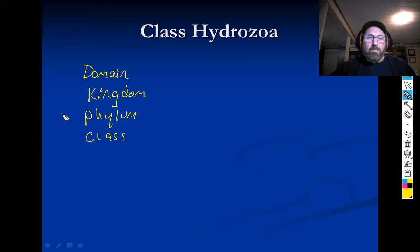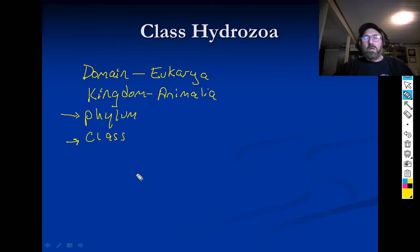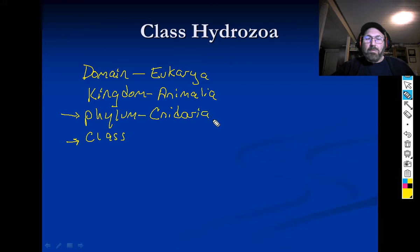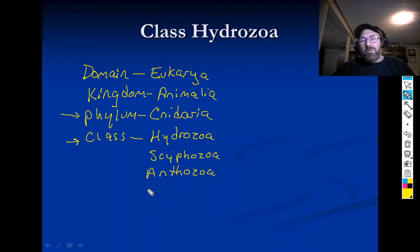We're going to focus mainly on phylum and class, since everything we'll discuss from here on is domain Eukarya — meaning they have a nucleus — and kingdom Animalia. We talked about phylum Porifera; we're now talking about phylum Cnidaria. The classes under Cnidaria are Hydrozoa, Scyphozoa, Anthozoa, and a relatively new one called Cubozoa.